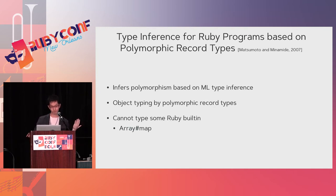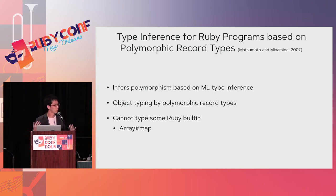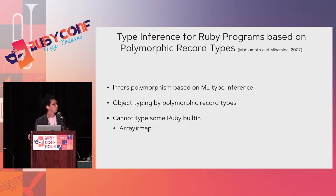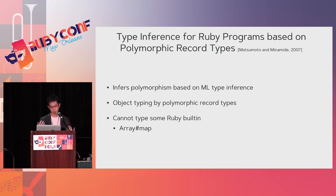This is my own paper: 'Type Inference for Ruby Programs Based on Polymorphic Record Types,' published in 2007. My paper infers polymorphic method types for Ruby programs. It is based on ML type inference — ML meaning meta language, a programming language, not machine learning. We used an encoding of polymorphic record types to represent the type of Ruby objects. But there is also a big limitation: it cannot type some Ruby built-ins like arrays and hash maps. Our type system cannot give a type to array methods.